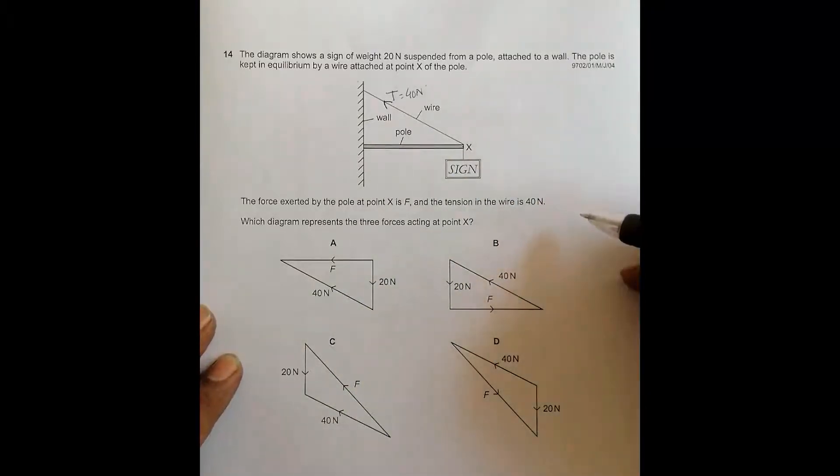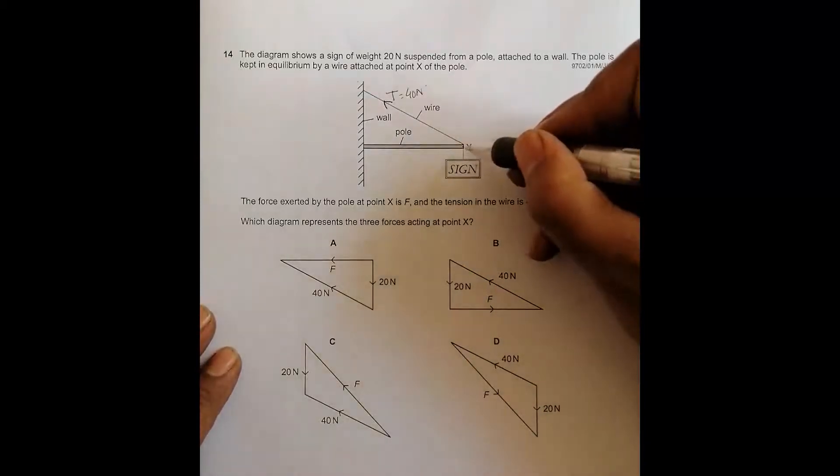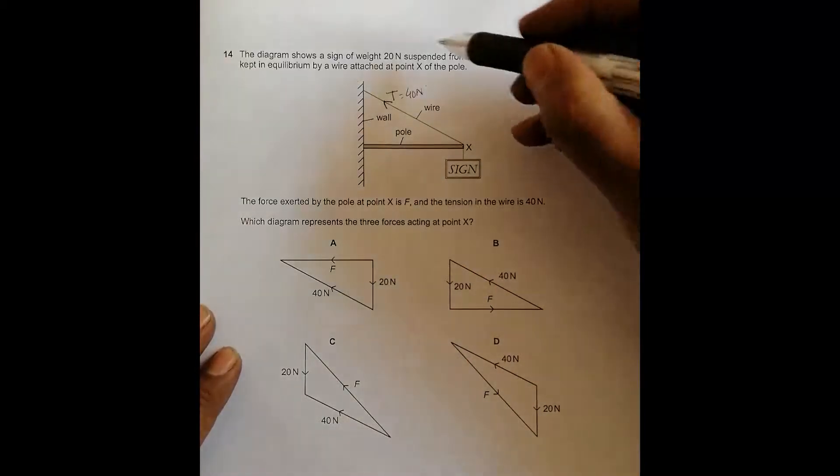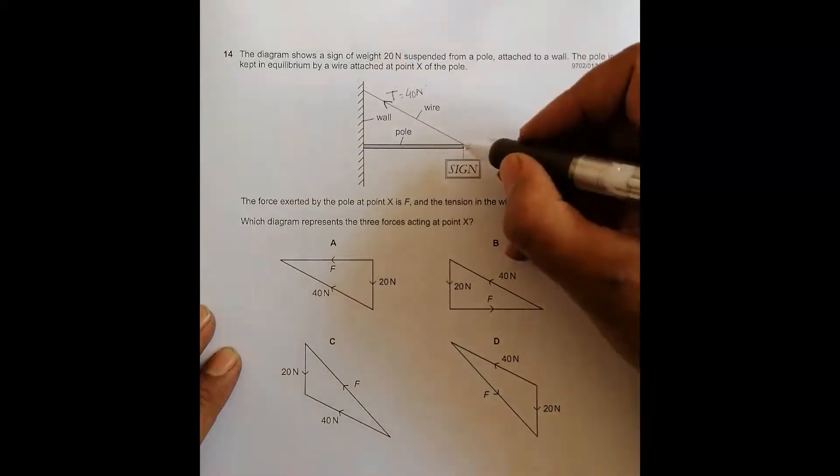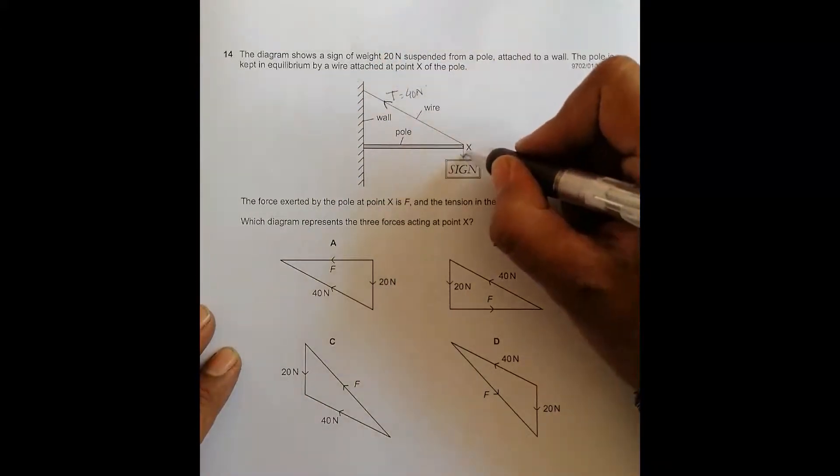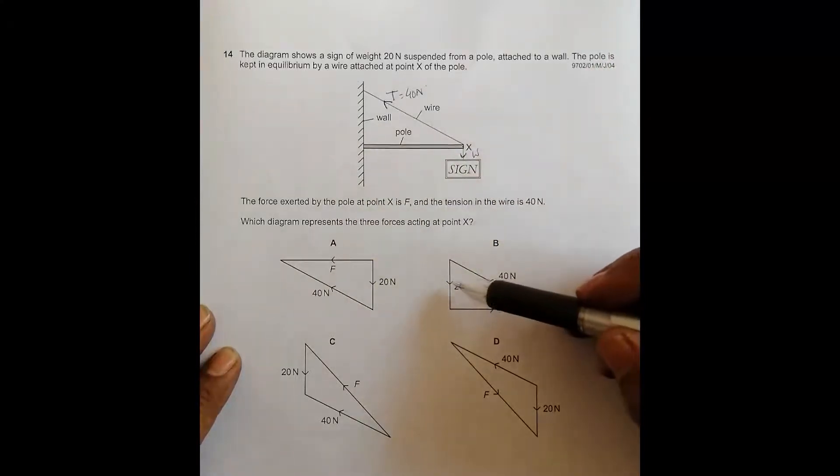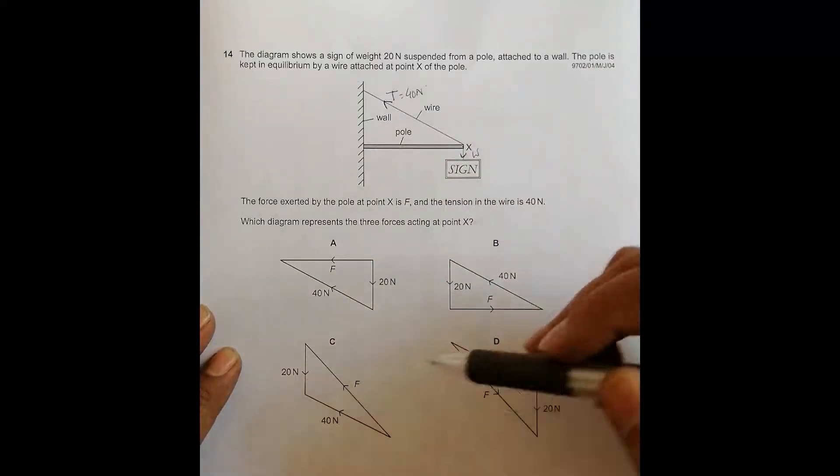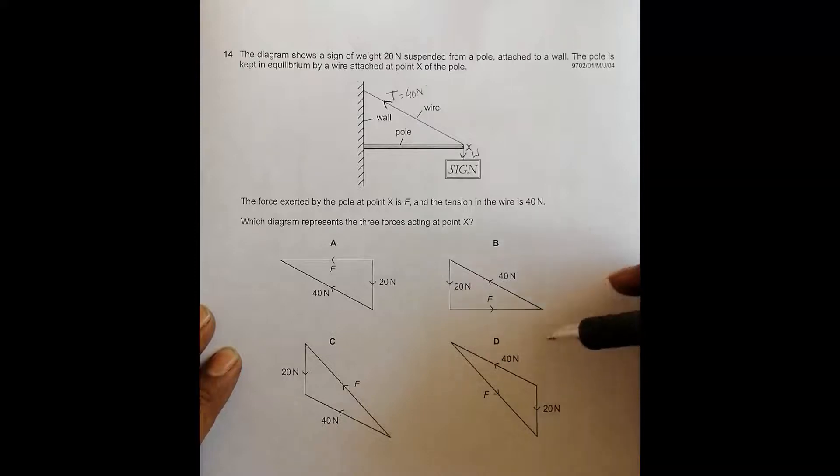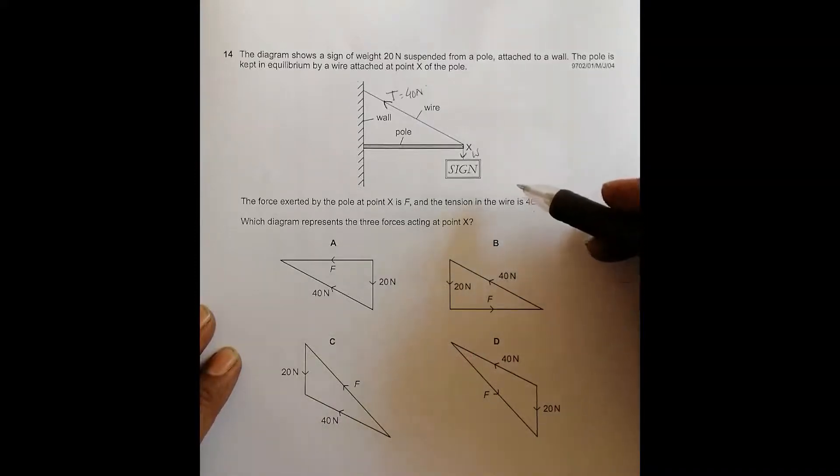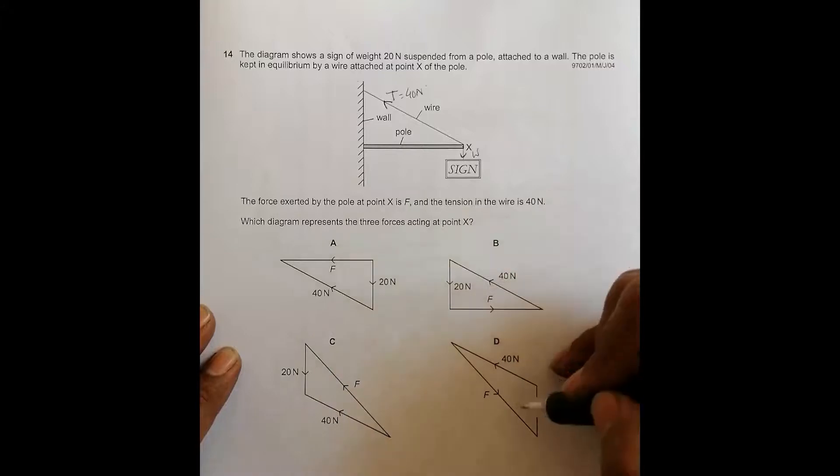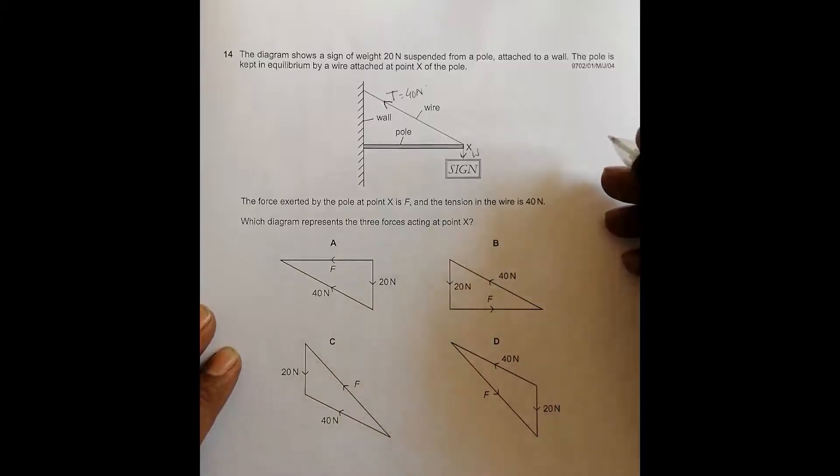Let's go through the weight. The weight is given as 20 Newton, and it's vertically downward. So this is the weight here. If you go through all the diagrams, all these 20 Newtons have been shown vertically downward, so they qualify. With the first two forces, all these diagrams qualify for the answer.